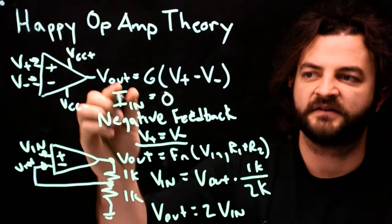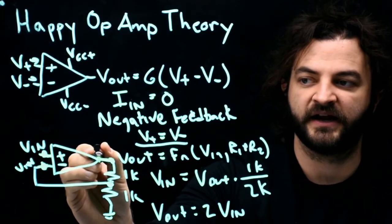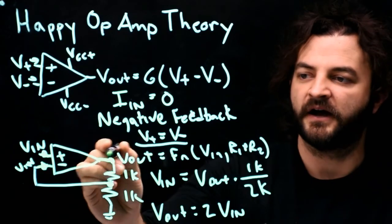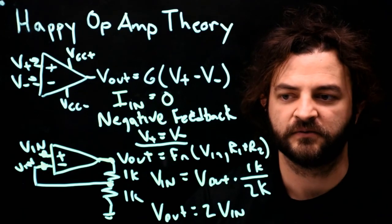Just keep in mind, the current, no current goes in or out of an input of an op-amp. Current, of course, can come in and out of the output. It will control the output to make the two voltages equal.